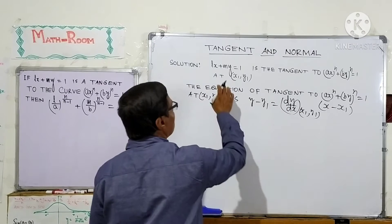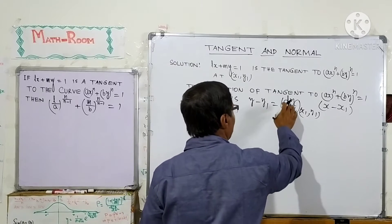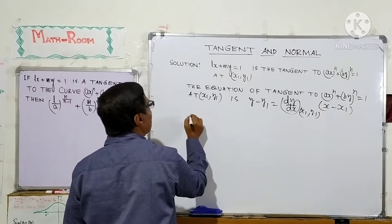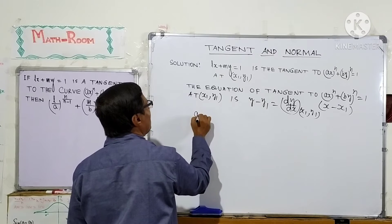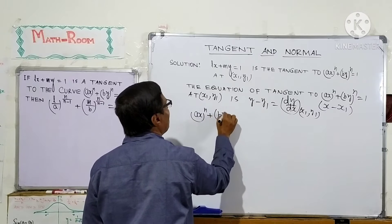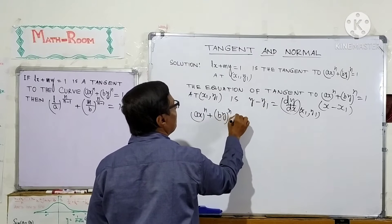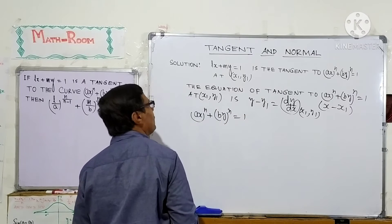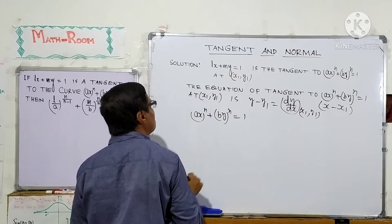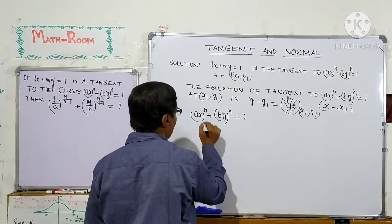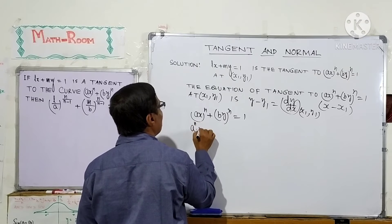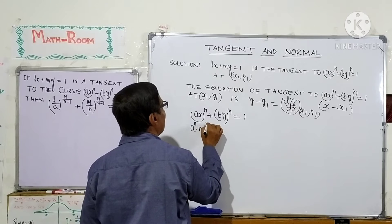First we find the derivative of y with respect to x for this curve. The curve is Ax to the power n plus By to the power n equals 1. We differentiate both sides with respect to x.